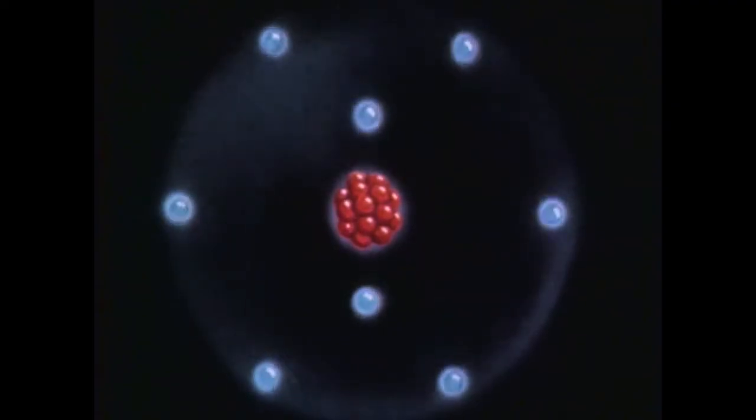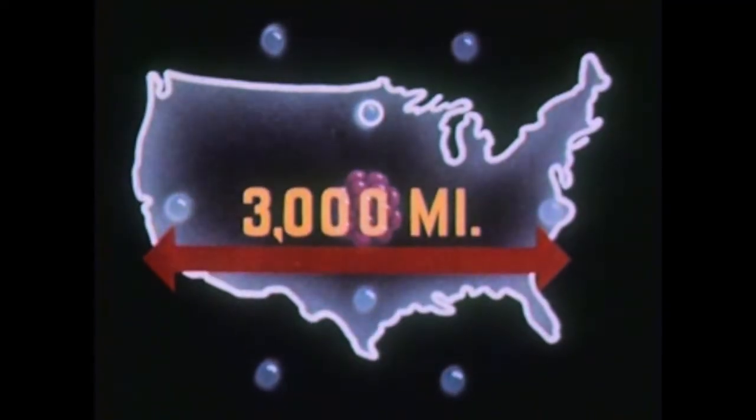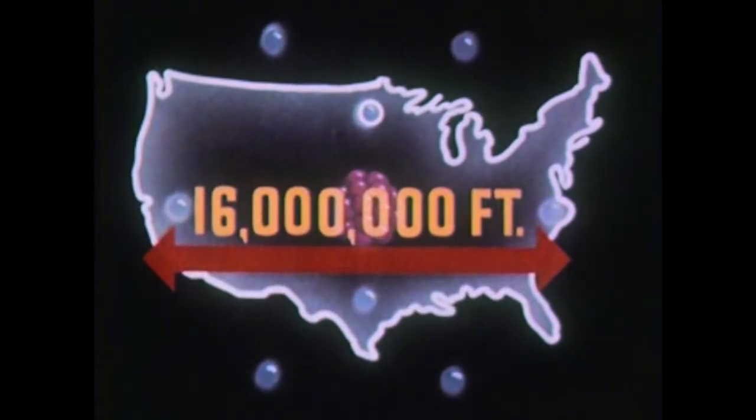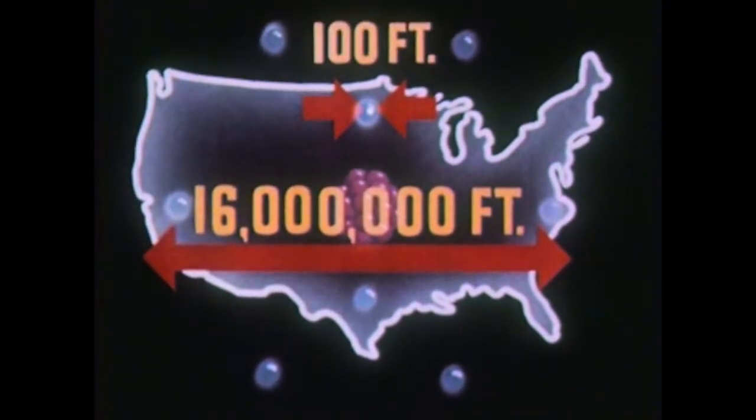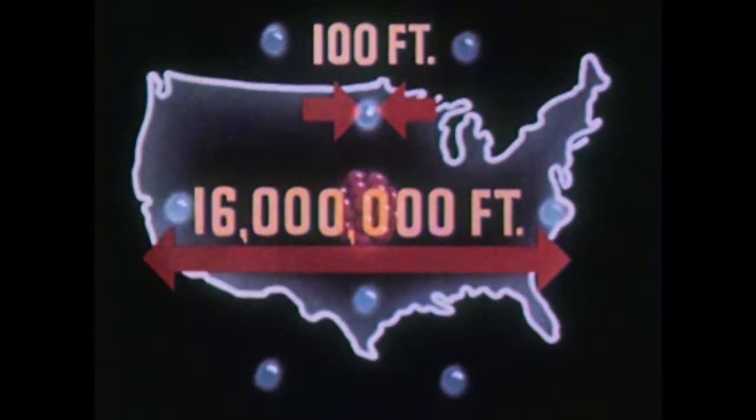It is impossible to show the correct relative proportions of an atom on this screen. For example, if an atom could be as large as the United States, one of its electrons would be only about 100 feet across. Therefore, to tell our story, we must resort to a symbol.